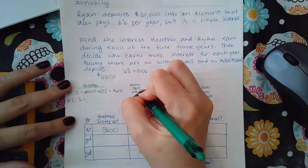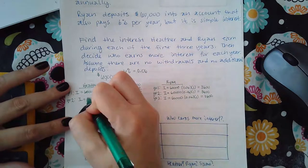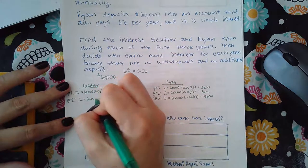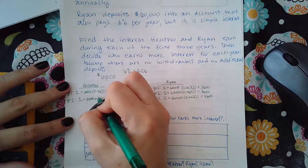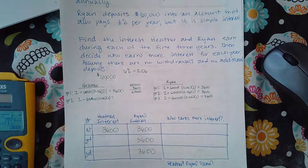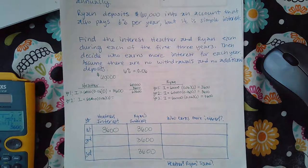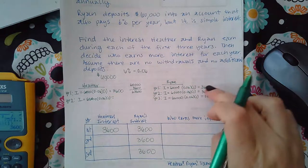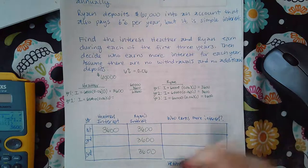Because now Heather has $60,000 plus the amount of money that she's earned in interest. So now she has $63,600 and that's the amount that you use. So that's what it means compounded. It's collected and added to your balance, whereas this one is not added to your balance throughout each year.